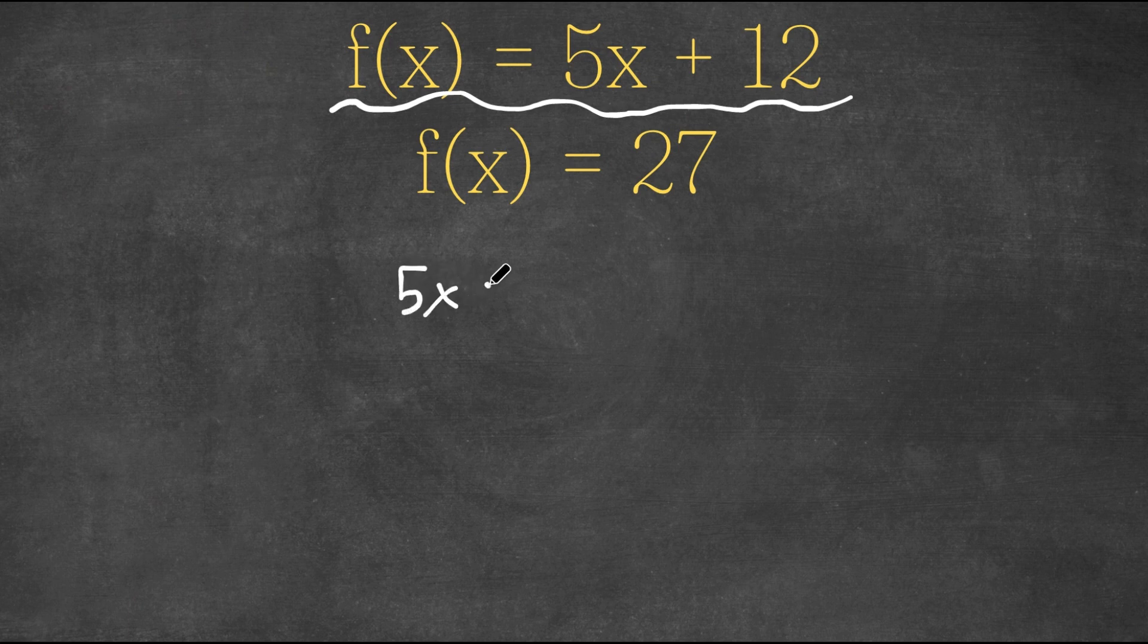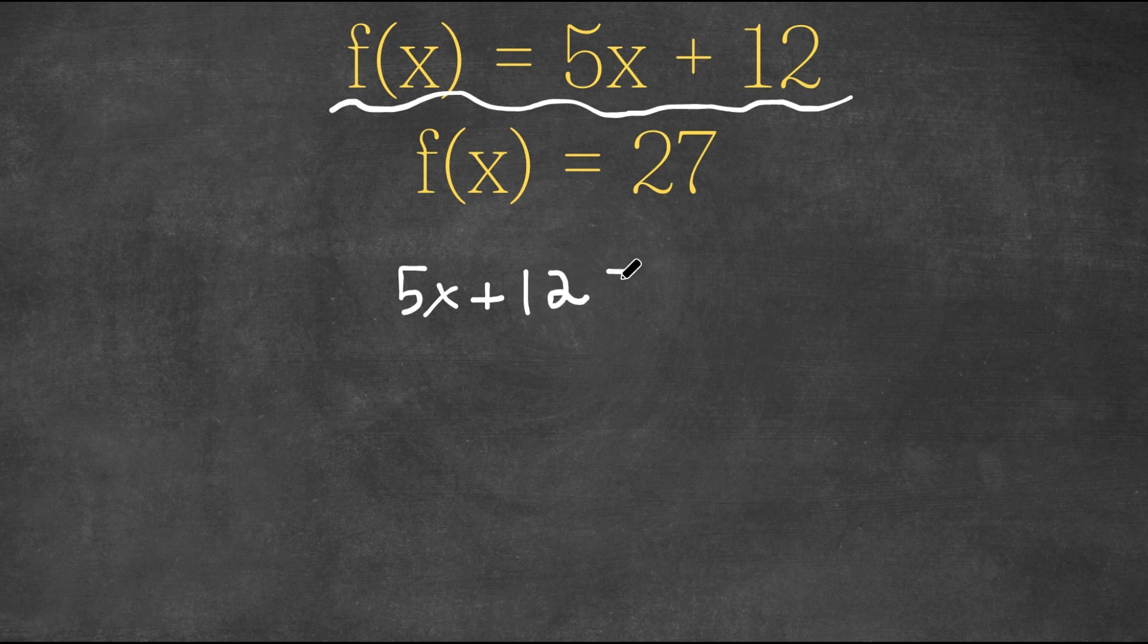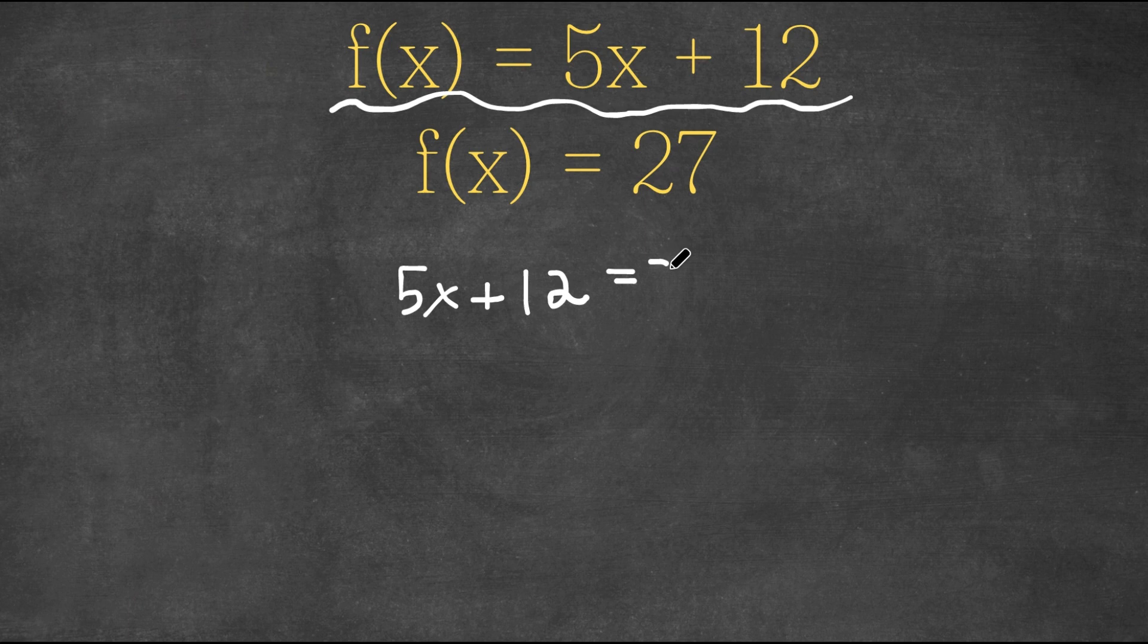We know that our function is f(x) = 5x + 12, and we know that the value of the function is 27. Well, doesn't that mean that these two equal each other? Yes, it does.